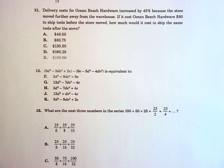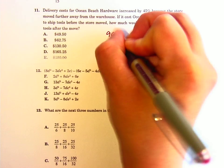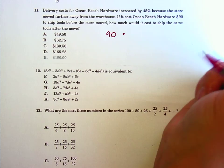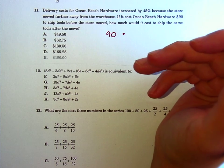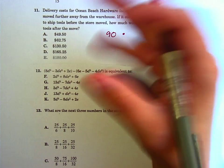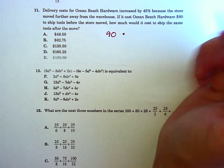Delivery costs for Ocean Beach Hardware increased by 45% because the store moved away from the warehouse. If it costs Ocean Beach Hardware $90 to ship tools before the store moved, how much would it cost after? Okay, so it used to cost $90, and remember last time when we had like 100%, but then we subtracted 25%, so now we only had 75% left? Same thing here, only this time we have 100%.